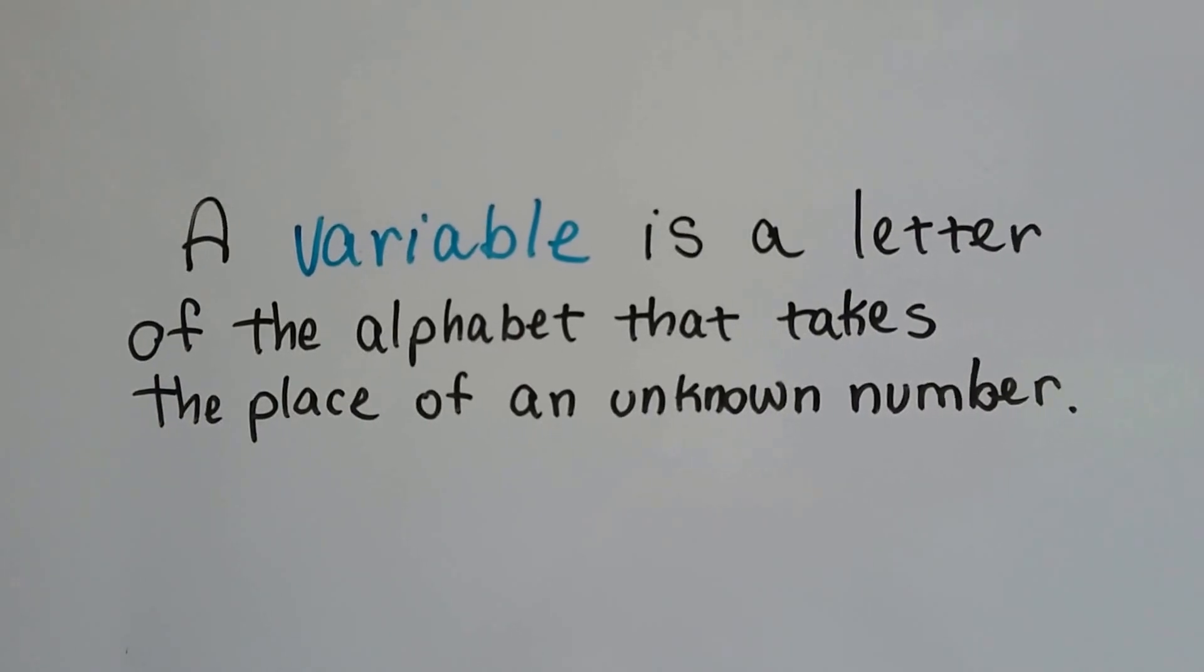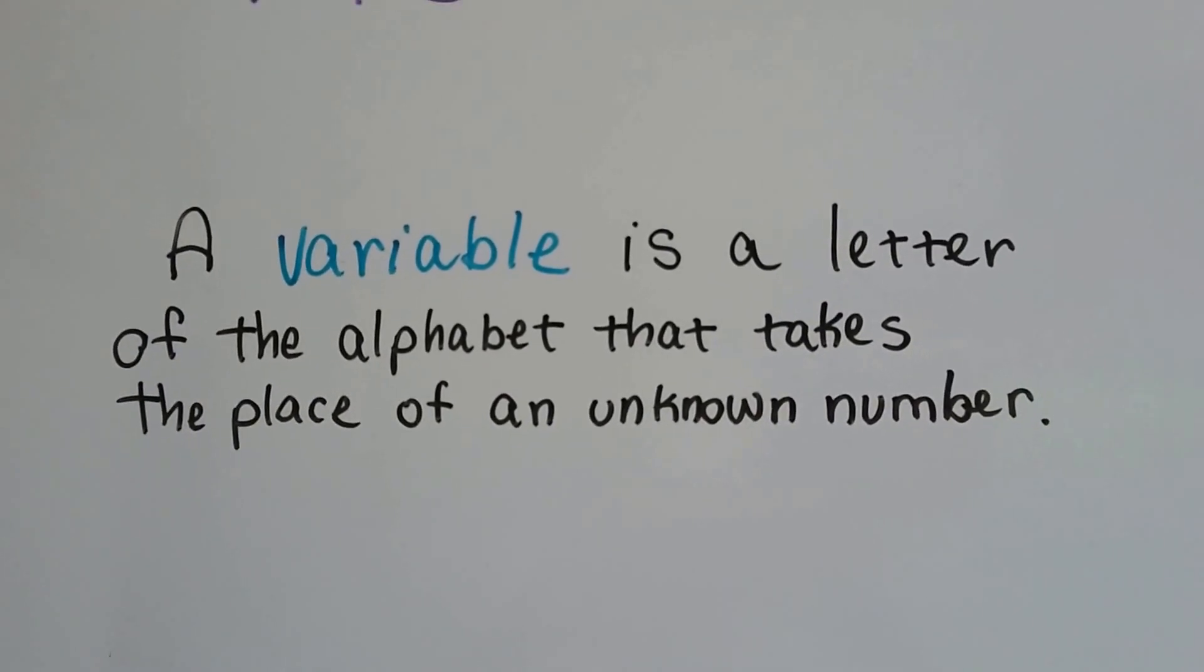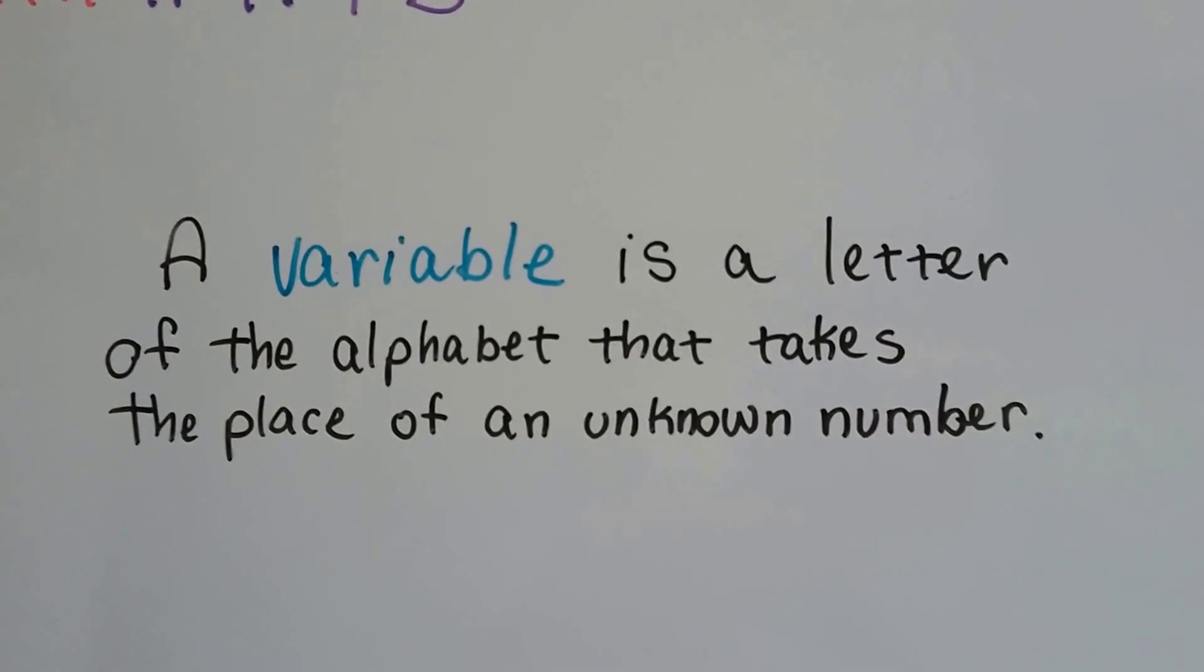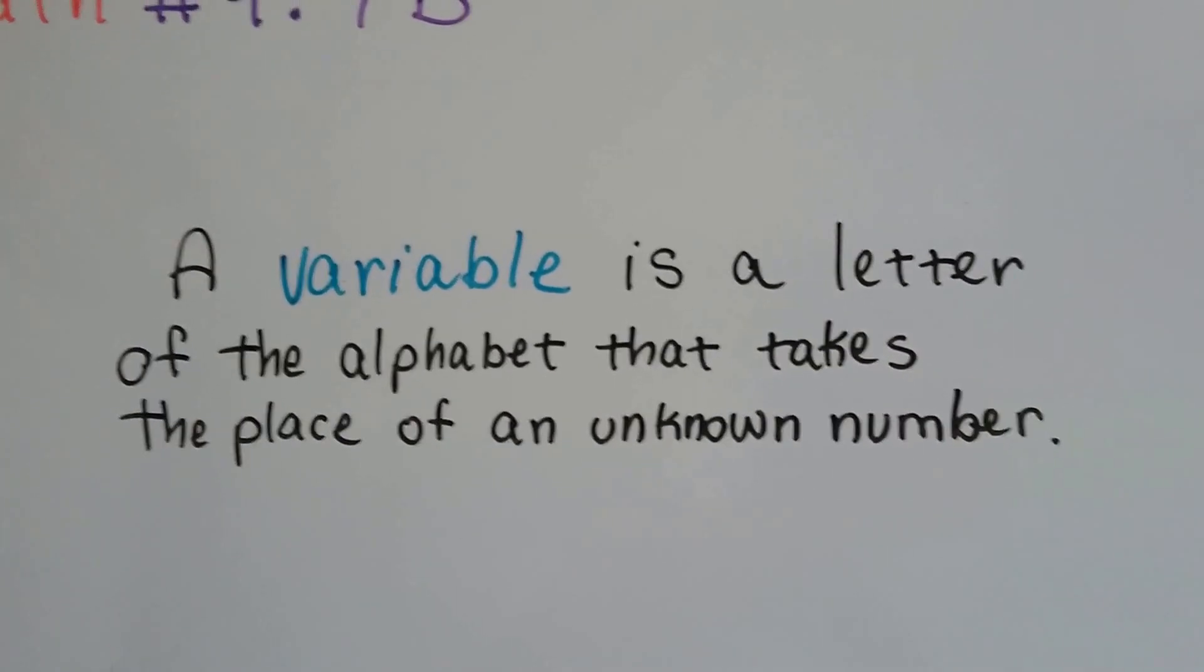A variable is a letter of the alphabet that takes the place of an unknown number. Instead of leaving a blank space like we did in kindergarten and first grade, we're going to put a letter of the alphabet there. That's all.